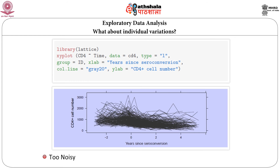What about the individual variations? They are of importance because longitudinal data allows us to study individual variation. One way, as we did for the orthodont data, is to draw connecting lines for each individual. However, since we have so many observations for this dataset, when we draw the plot it becomes very noisy and we cannot see or infer anything — it is all jumbled up.